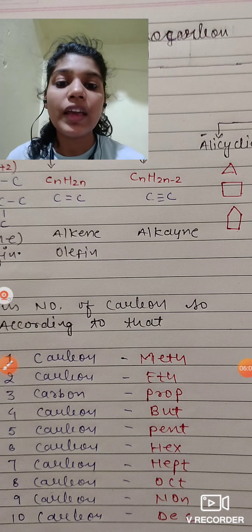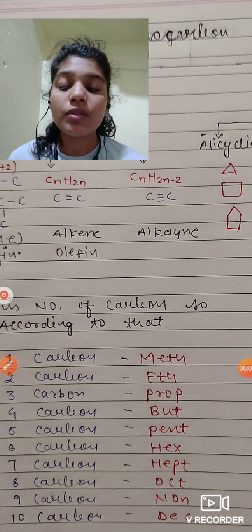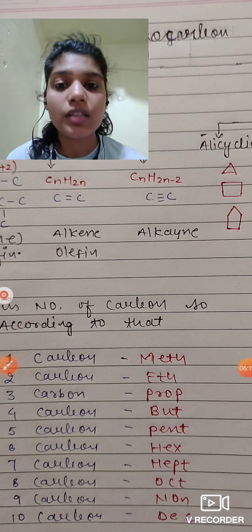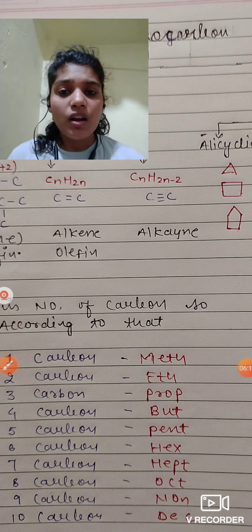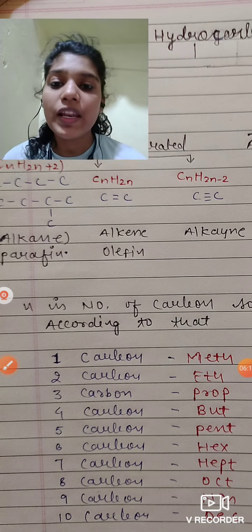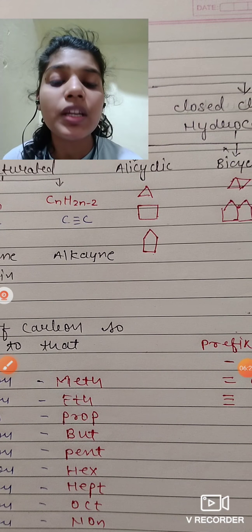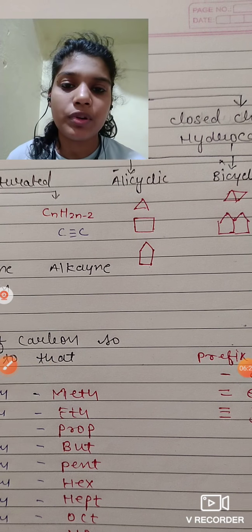Third thing is that alkynes. It consists triple bond. Their formula is CnH2n-2. This is called aliphatic hydrocarbon.